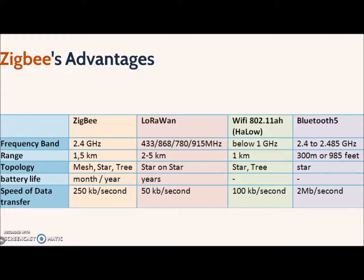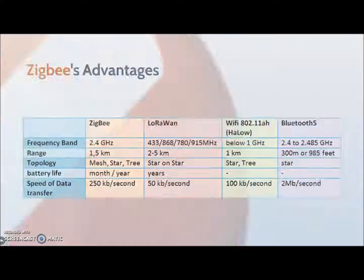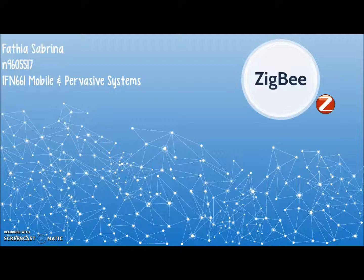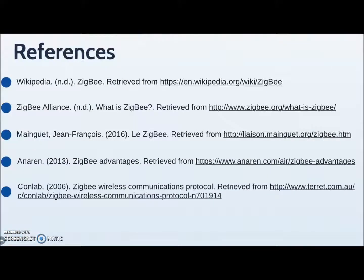In conclusion, Zigbee is a wireless communication protocol suitable for a wide variety of IoT applications, with low battery consumption and a cheap module to operate device communication. That's all from me, and here are the references I used. Thank you.